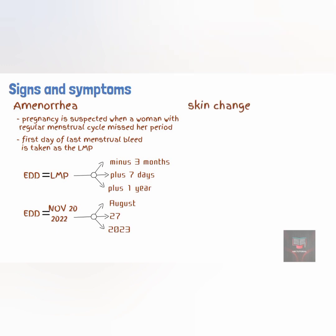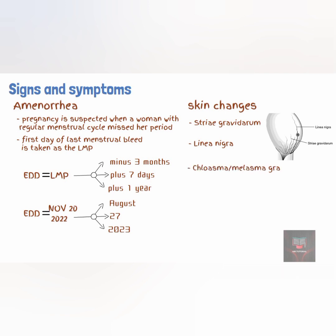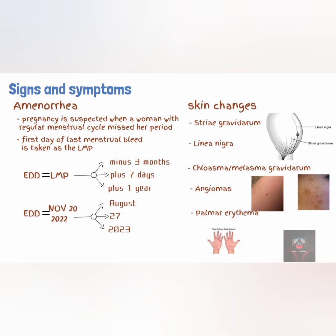Some of the skin changes in pregnancy include striae gravidarum, also called stretch marks, which are reddish streaks usually located on the abdomen, breasts, and thighs. Linea nigra, which is the darkly pigmented line located at the midline of the abdomen. Chloasma or melasma gravidarum, also called mask of pregnancy, which are irregular brown patches of varying size on the face and neck. Angiomas, which are usually present on the face, neck, chest, and arms, and palmar erythema. These skin changes are usually as a result of melanocyte-stimulating hormone.